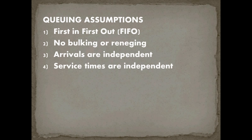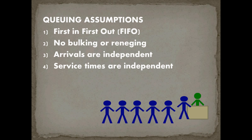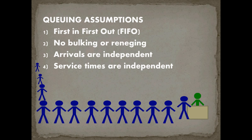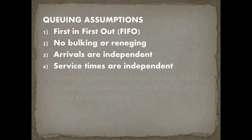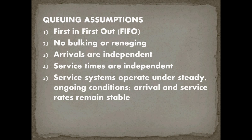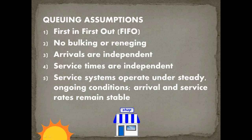The fourth assumption is that service times are independent. Behavioral studies suggest servers may work faster when the line is short but slow down when the line is long. The fifth assumption is that service systems operate under steady-state conditions — arrival and service rates remain constant throughout the day. For a coffee shop, this would mean the same number of people want coffee in the morning, at noon, and after dark, which can be a strong assumption. Otherwise, we model the queue only for specific time windows of steady state.